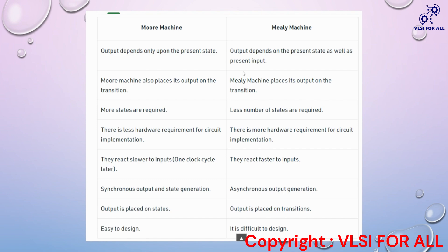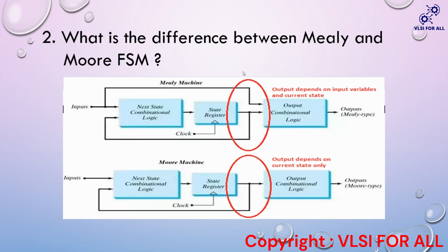Moore reacts slower to inputs and Mealy reacts faster to inputs, because in Moore the output is received one clock cycle later. Moore has synchronous output and state generation, whereas in Mealy machine we get asynchronous output generation. Moore output is placed on states and Mealy output is placed on transitions. When it comes to design, Moore is easier to design and Mealy is more difficult to design.